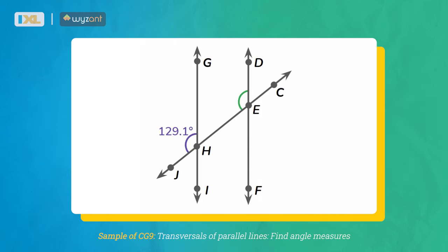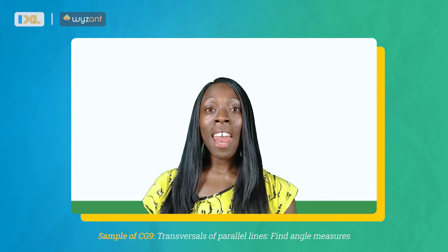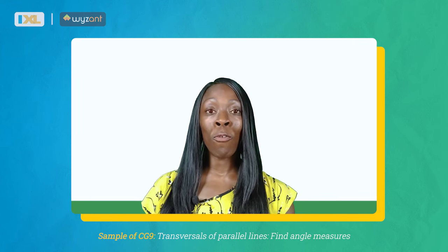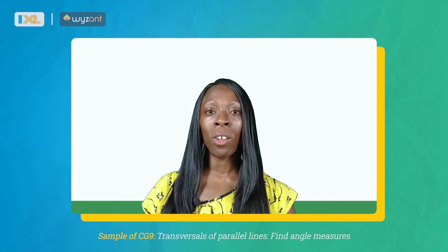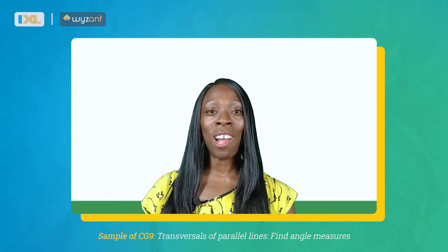Now since GI and DF are parallel lines, these angles are congruent. So the measure of angle JHG equals the measure of angle HED, which is 129.1 degrees. Now that you know some of the angle relationships formed when a transversal intersects two parallel lines, you are ready to find angle measures.